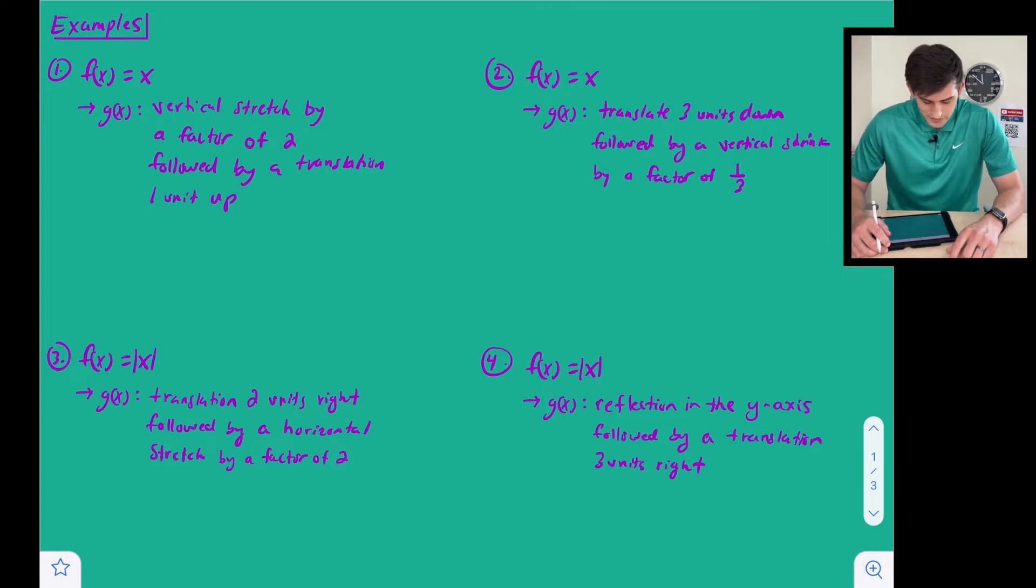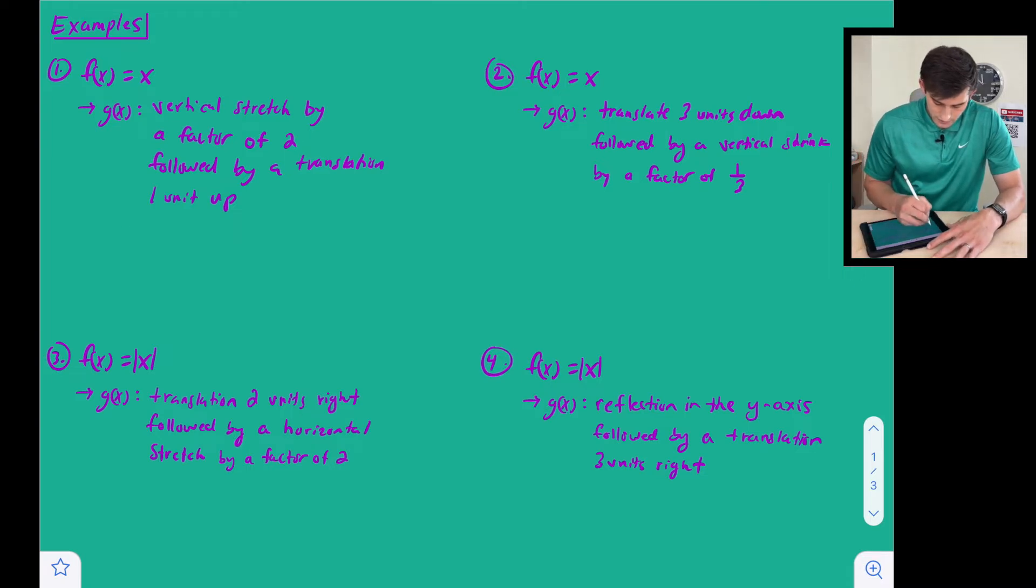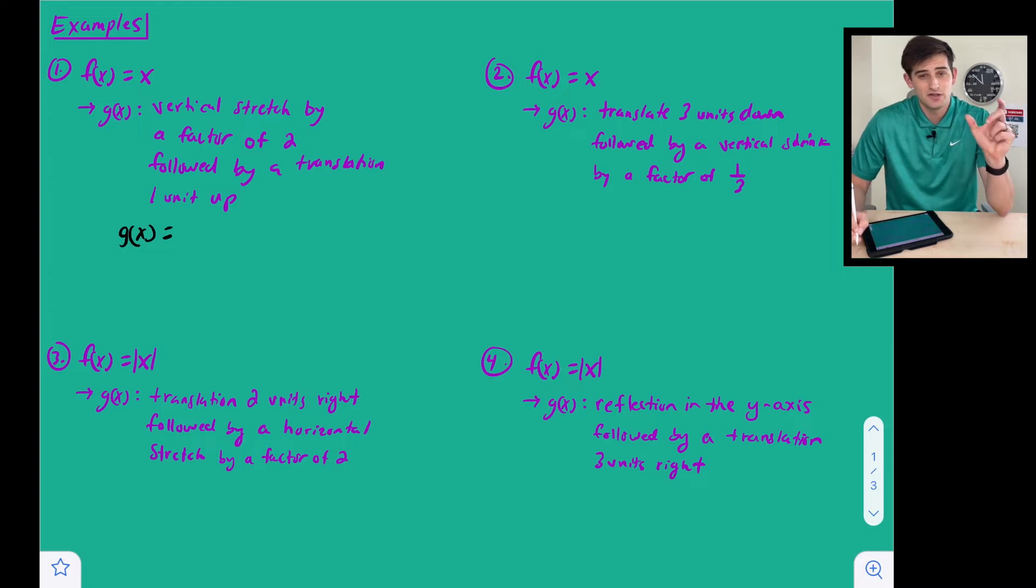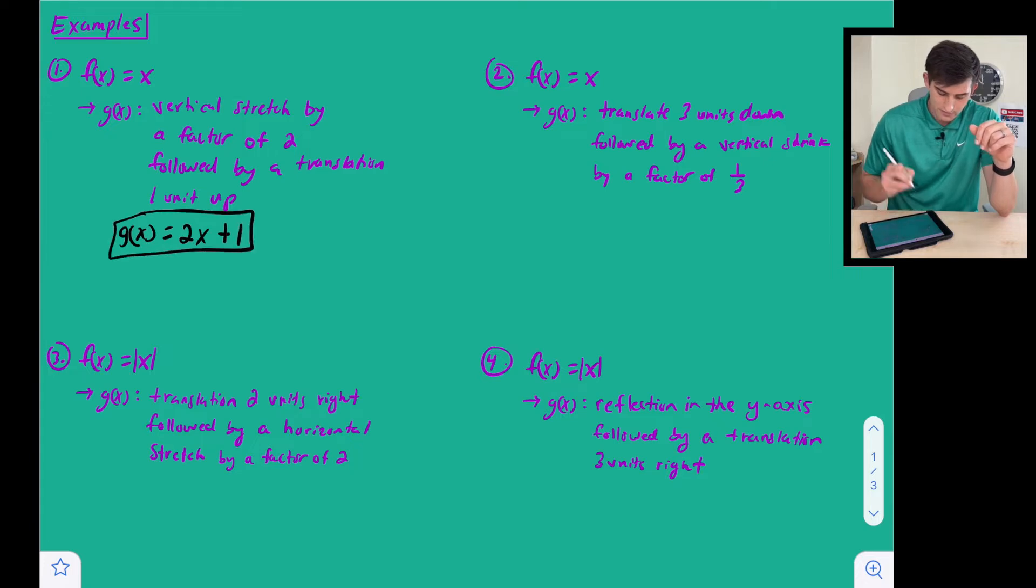For number one, f of x is equal to x, and we are going to apply a vertical stretch by a factor of two, followed by a translation one unit up. So we're going to start off with g of x is equal to, and since we're starting out with our parent linear function f of x equals x, when we vertically stretch by a factor of two, that's going to bring us to 2x. And now we're going to translate one unit up, so we just write plus one, and there is our transformed function.